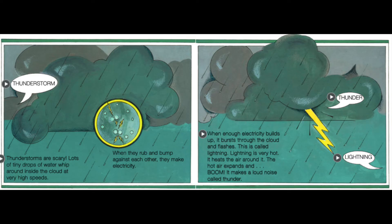Thunderstorms are scary. Lots of tiny drops of water whip around inside the cloud at very high speeds. When they rub and bump against each other, they make electricity. When enough electricity builds up, it bursts through the cloud and flashes — this is called lightning. Lightning is very hot. It heats the air around it, and the air expands and BOOM — it makes a loud noise called thunder.